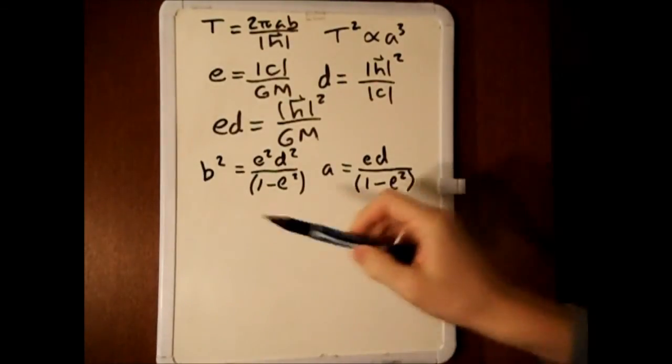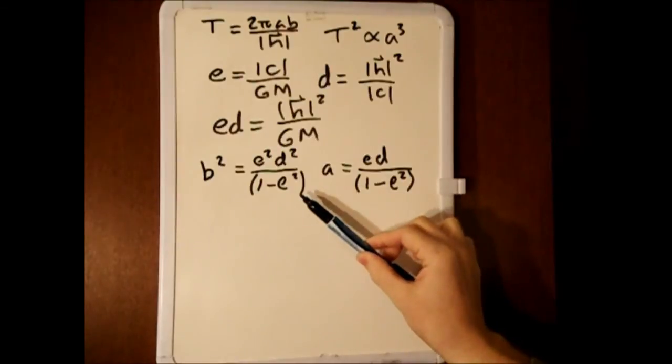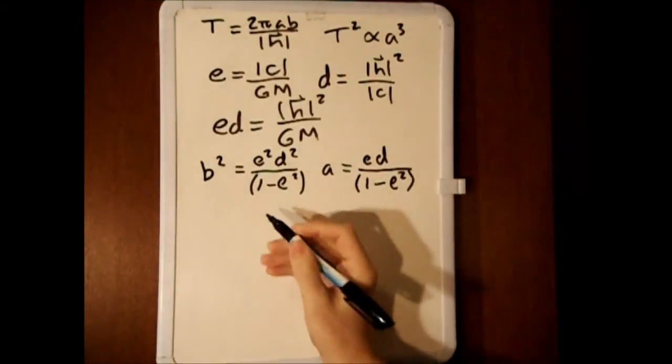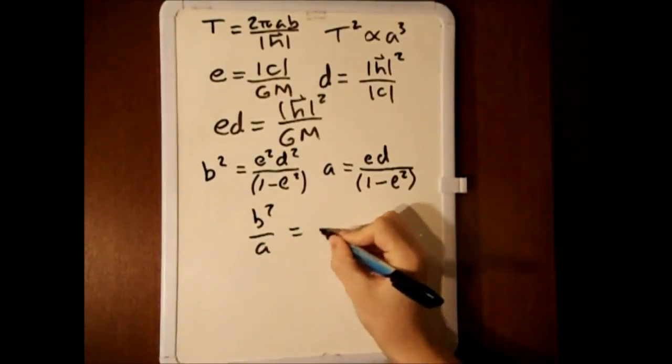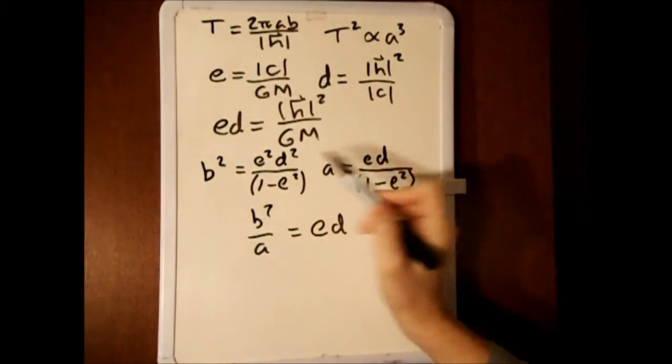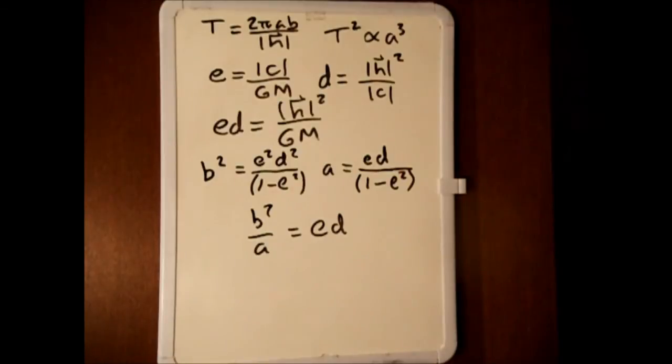Here are two more equations that Stewart conveniently defined for us in his textbook. We now know that b squared over a is equal to ed, after making the appropriate substitutions and canceling everything out.